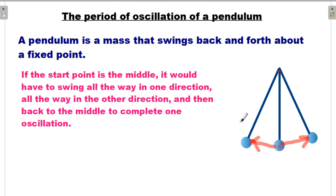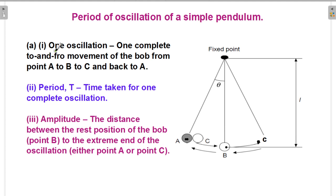If the start point is in the middle, the pendulum would have to swing all the way in one direction, all the way in the other direction, and then back to the middle to complete one oscillation. One complete oscillation is one complete to-and-fro movement of the bob from point A to B to C and back to A.